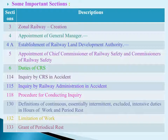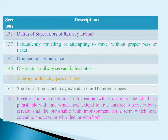Section 132 — Limitation of Work; Section 133 — Grant of TR; Section 135 — Duties of Supervisors of Railway Labour; Section 137 — Fraudulently travelling or attempting to travel without proper pass or ticket; Section 145 — Drunkenness or Nuisance; Section 146 — Obstructing a railway servant in his duties; Section 157 — Altering or Defacing Pass or Ticket; Section 167 — Smoking in Railway Premises, fine which may extend to Rs. 1000.